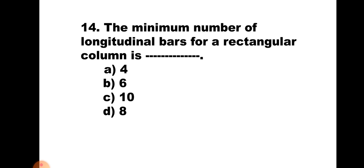Question number 14. The minimum number of longitudinal bars of a rectangular column is: A) 4, B) 6, C) 10, or D) 8. Minimum 4 bars are required. Hence the correct answer is A, 4.